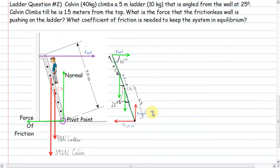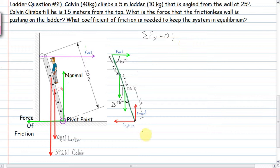Using the free body diagram, we have to use the three states of equilibrium: the sum of the forces in X, the sum of the forces in Y, and the sum of the torques. For the sum of the forces in the X direction — that's left and right — the only vectors drawn left and right are the wall force and the friction force. So the force of the wall has to equal the force of friction.